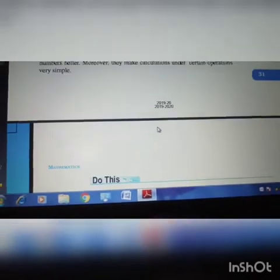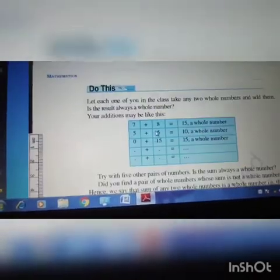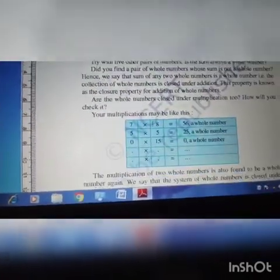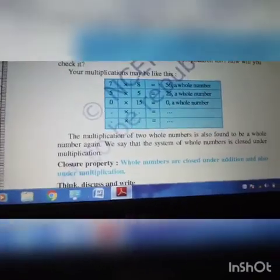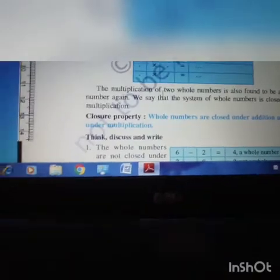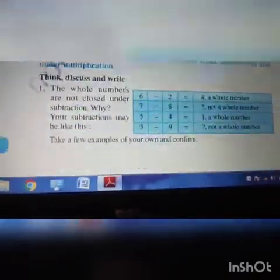Next, properties of whole numbers. So what are the properties of whole number? Closure property. It is closure under addition and multiplication. It is given right. Whole numbers are closed under addition and multiplication.